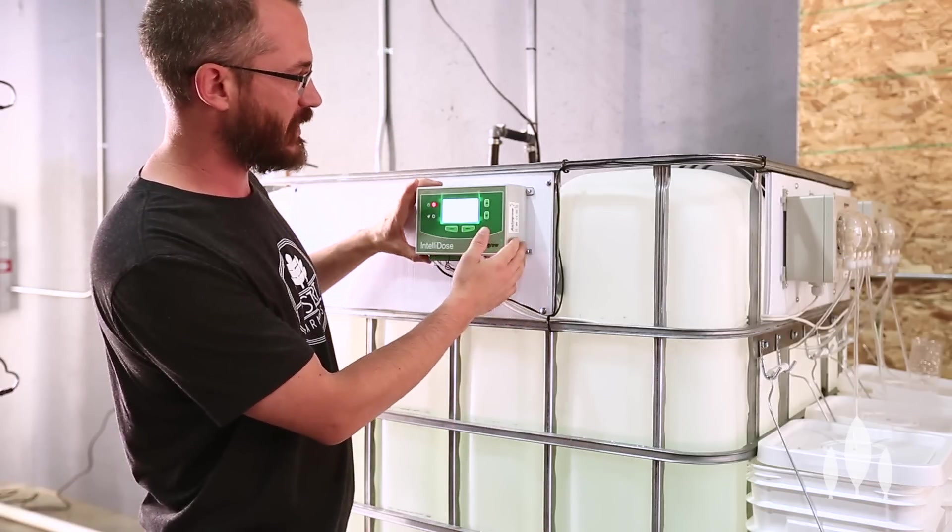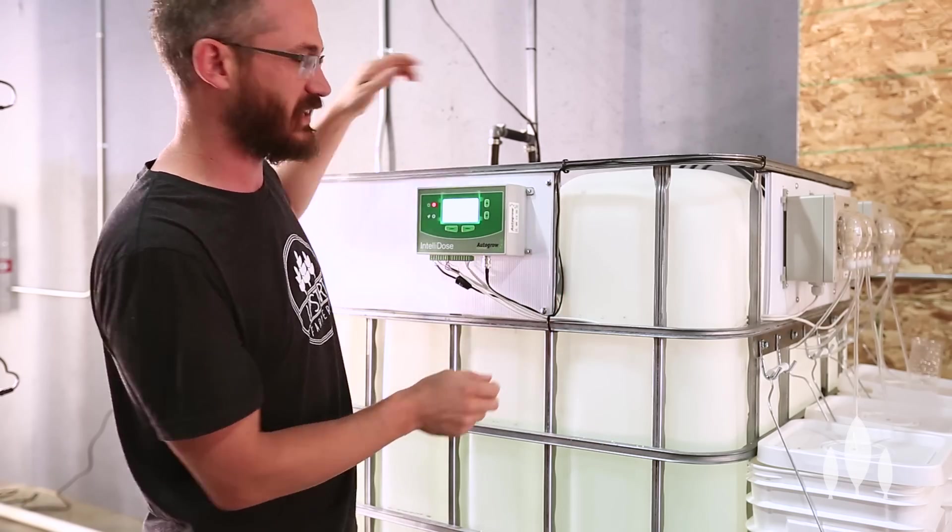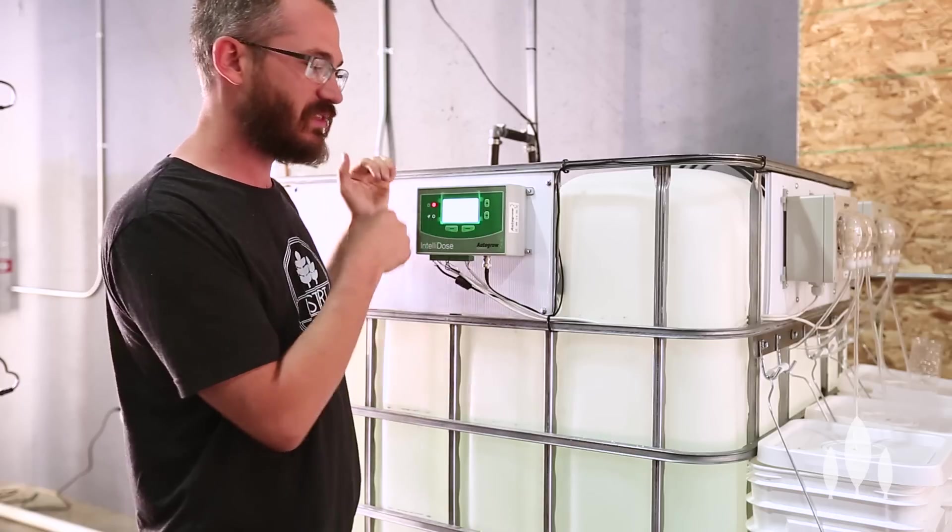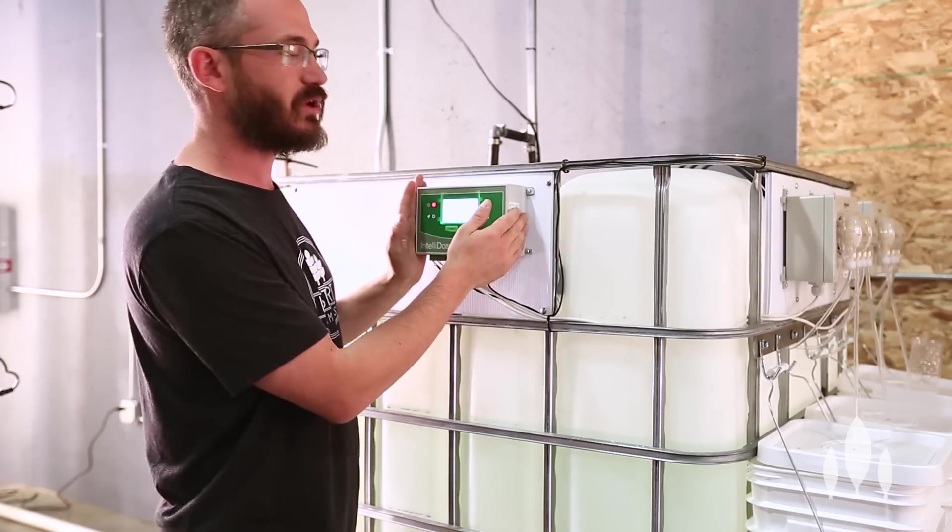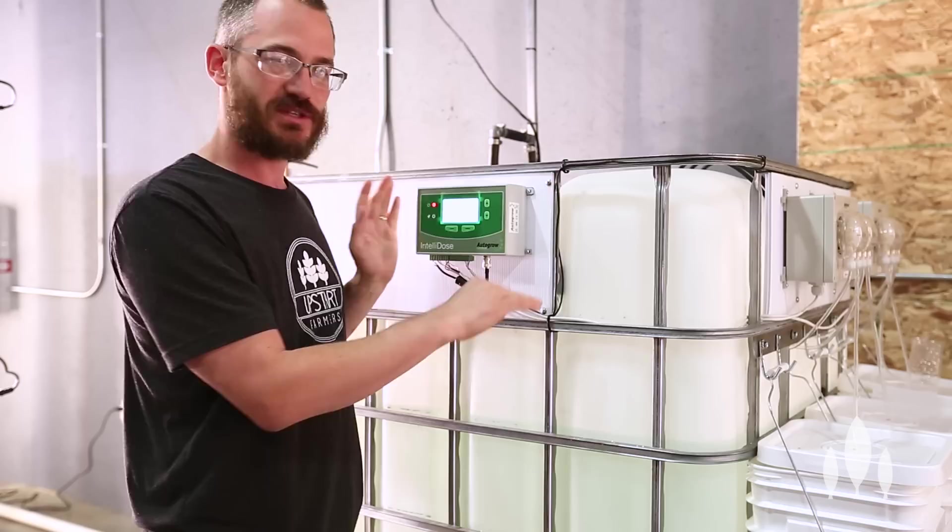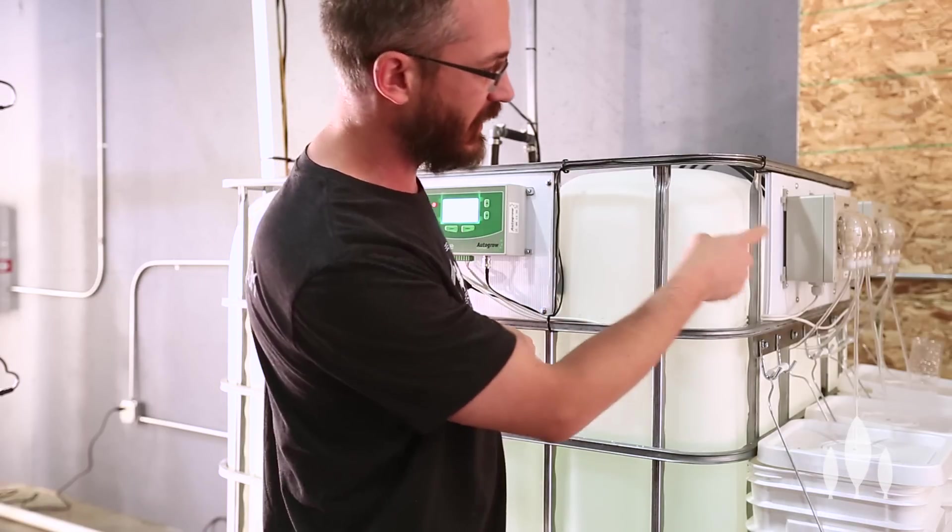So this is kind of the main piece. You've got the computer here, we've got all the inputs, which are like EC, pH. That's telling the computer what the solution EC and pH is. And then the computer makes a decision, and if it falls below a set point, say for EC, it controls little pumps over on this side, little peristaltic pumps.